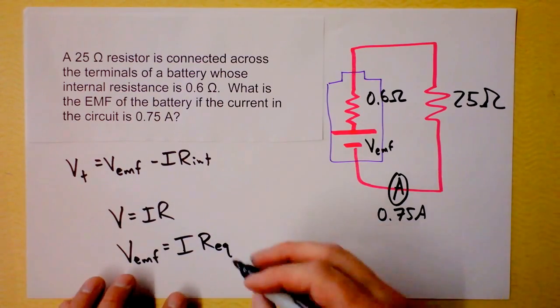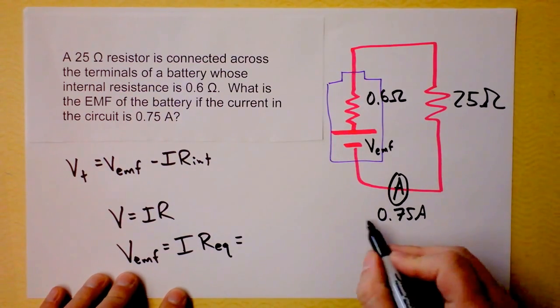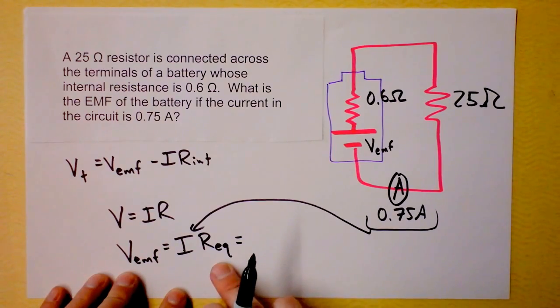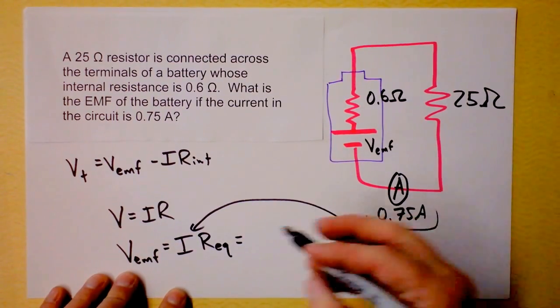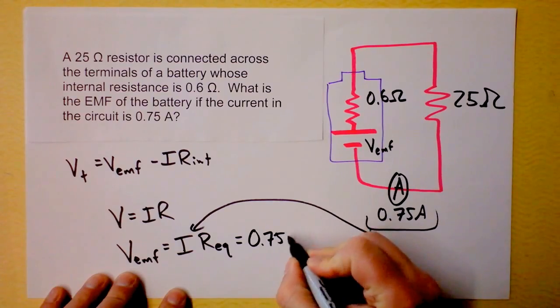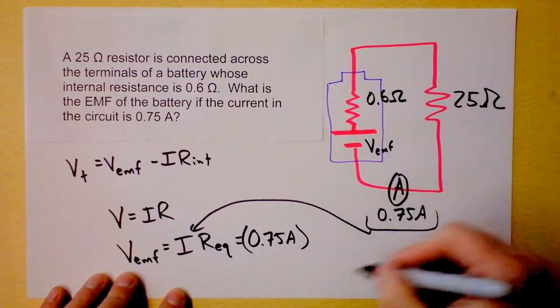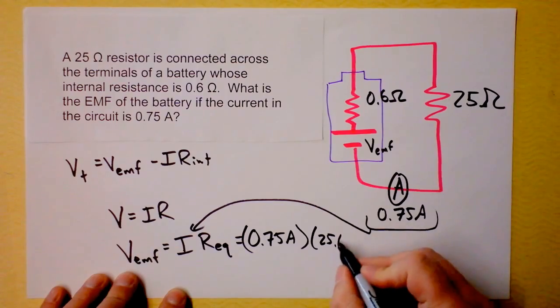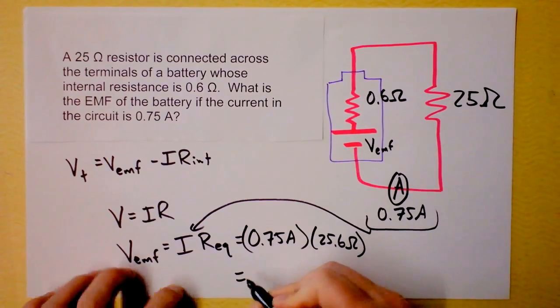And we're trying to find the EMF, so all I have to do is I have to plug in this current right here, and I have to figure out what the equivalent resistance is. I guess these two are in series, so I'm just going to add them. So it's 0.75 amps, and I'm supposed to multiply that sucker by 25.6 ohms. Here we go.